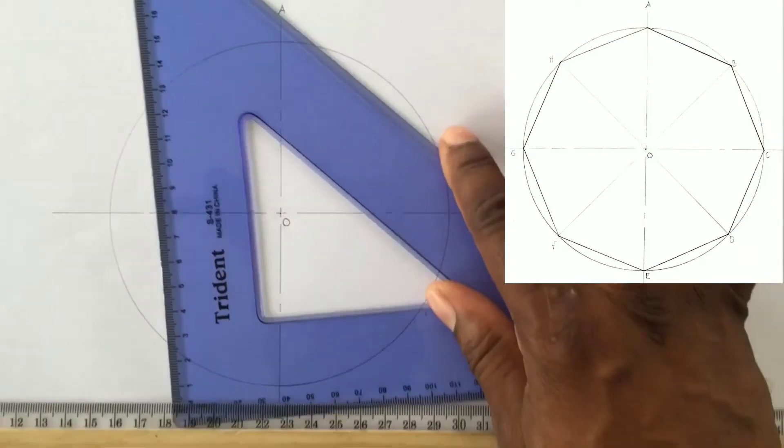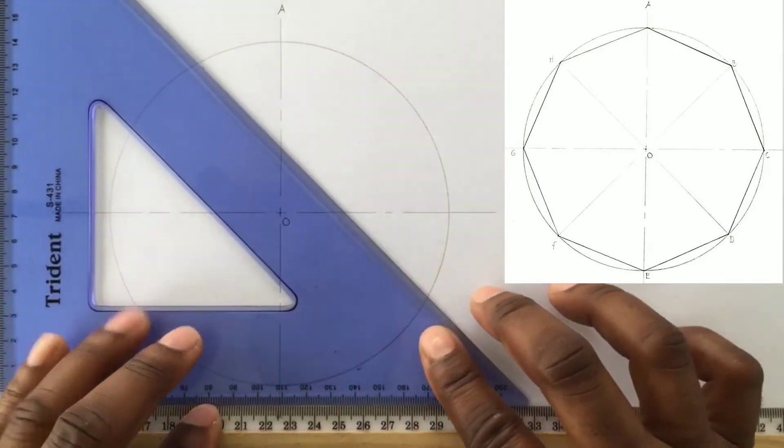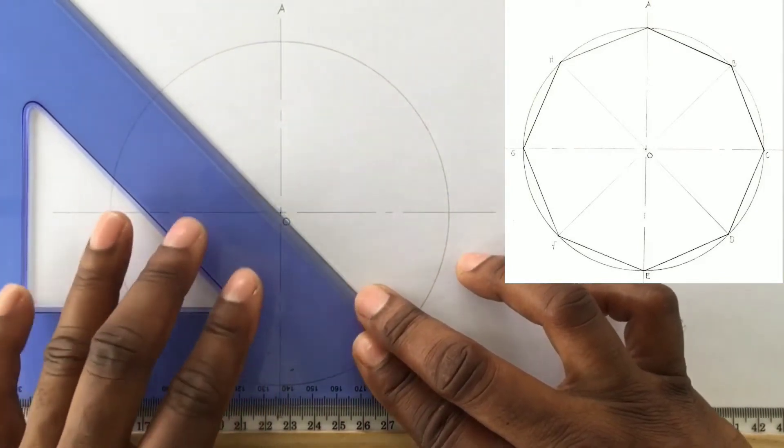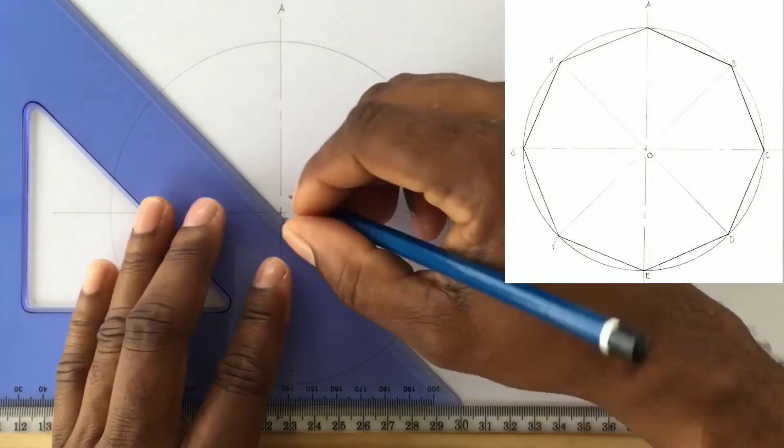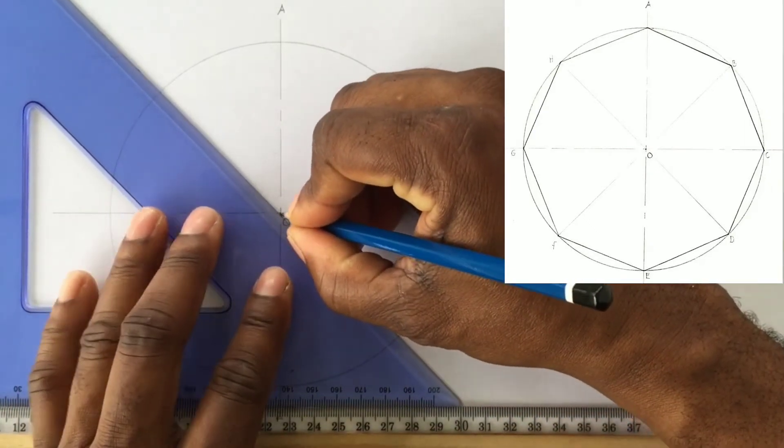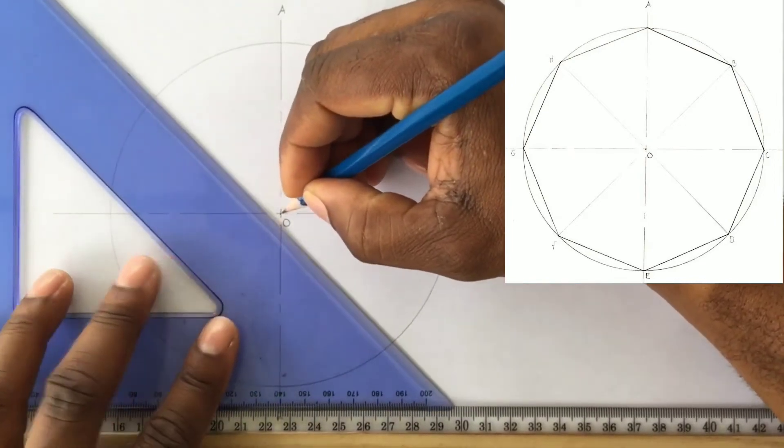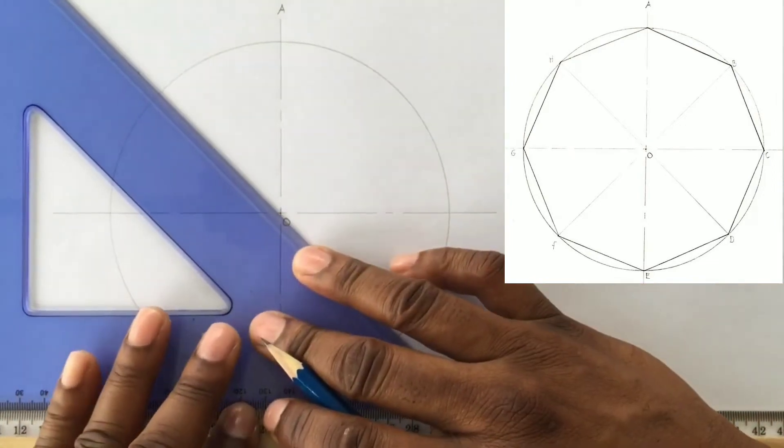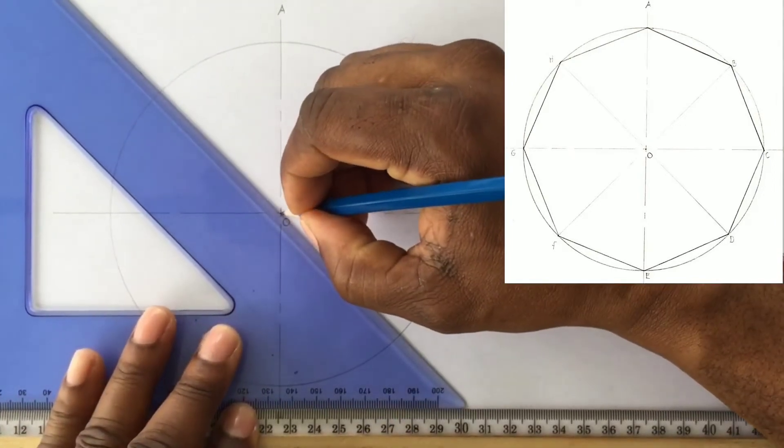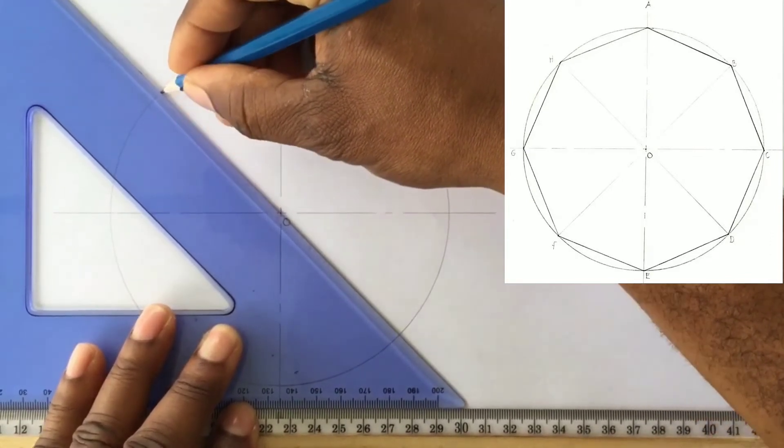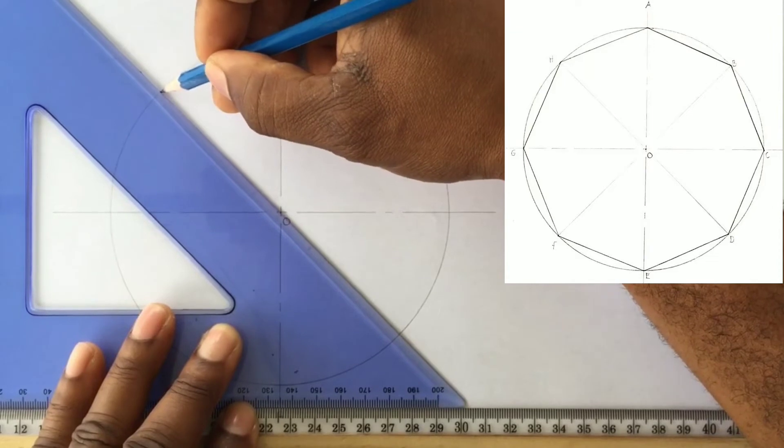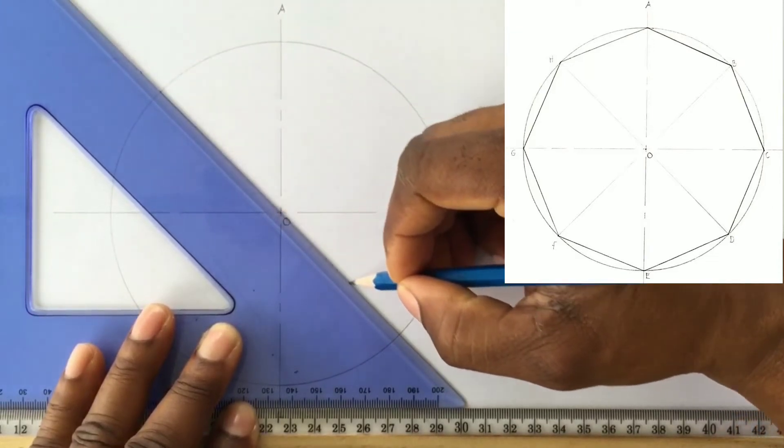With your T square held firm against your joint border table, slide your 45 set square until it is at the center of your circle. Then you will draw a line to touch the circumference of the circle and it will pass through the center O.